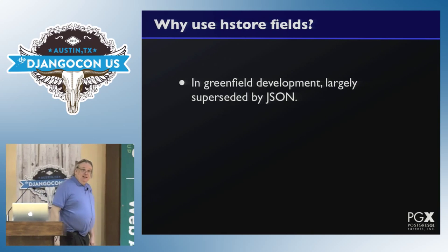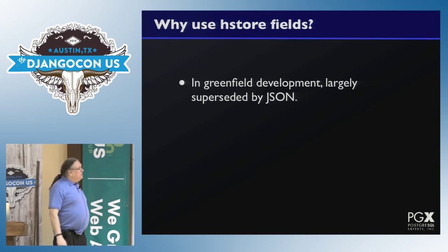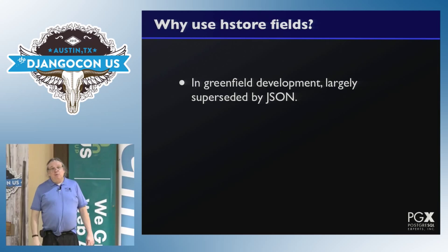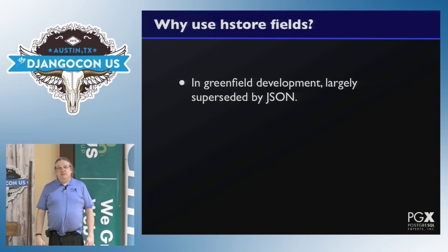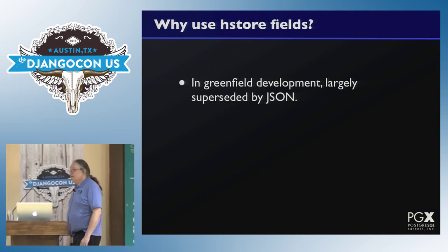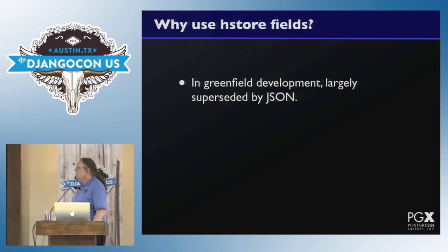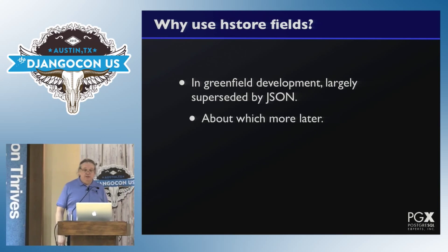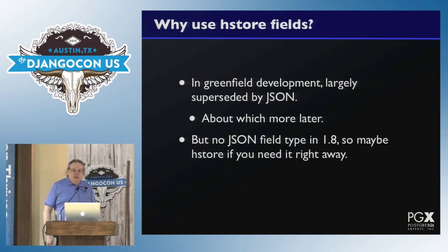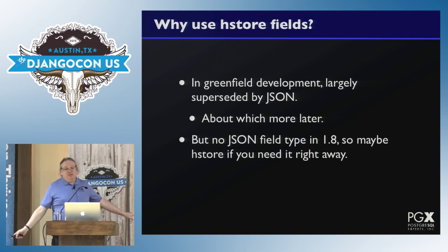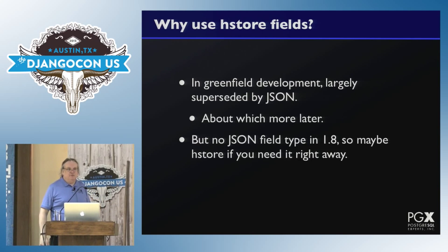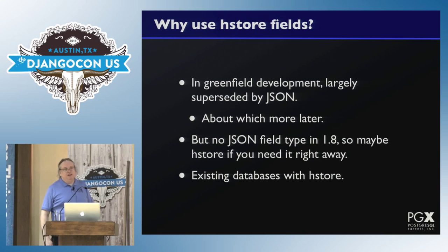That said, if you're doing green-field development right now, you probably want to use JSON instead, especially once 1.9 comes out and we have first-class JSON support in Django. But if you have to do something right now, there's no JSON type in 1.8, so use hstore if you need it right away, or if you're trying to plug into an existing database which has hstore.